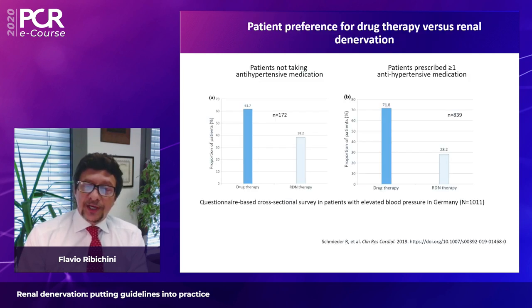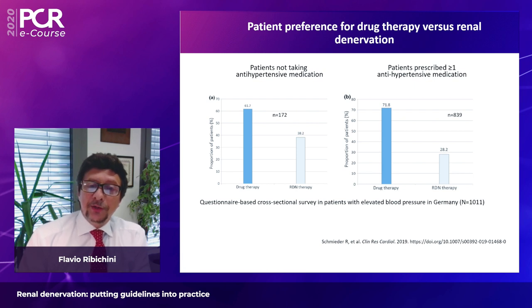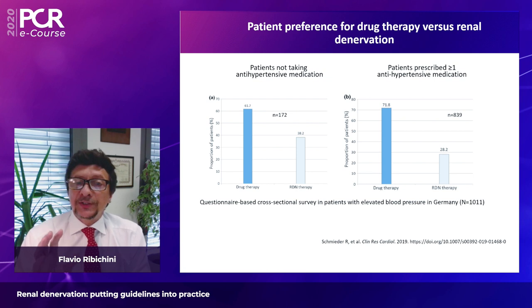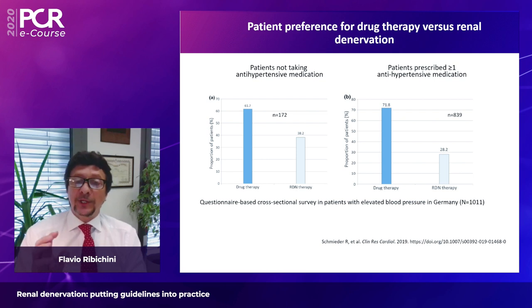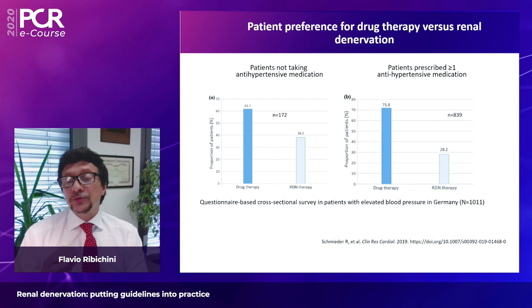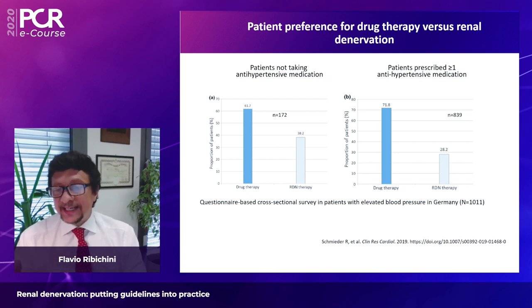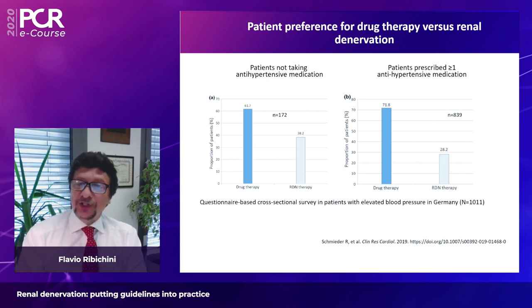An interesting slide derived from a questionnaire-based cross-sectional survey in a German population showed that among hypertensive patients not yet taking pills, nearly 40% would prefer renal denervation over starting a drug. Among those already on one medication, approximately one third would still prefer to drop the pills and undergo the interventional procedure.